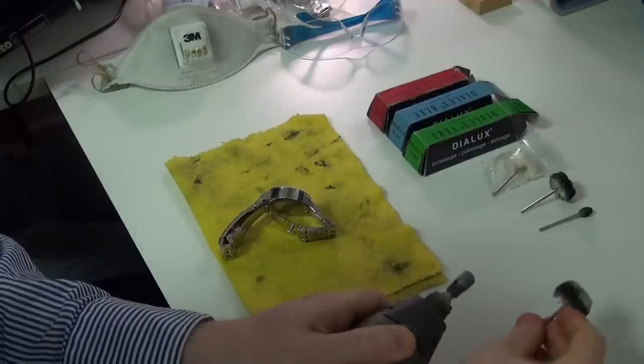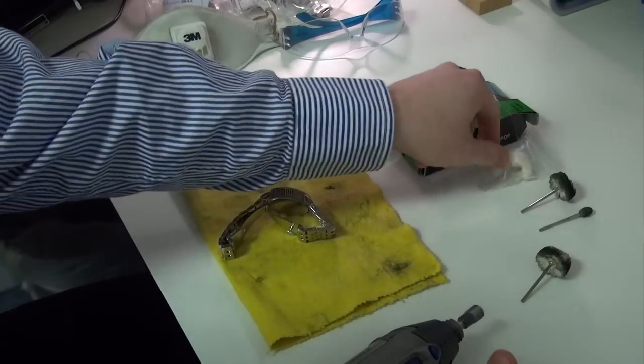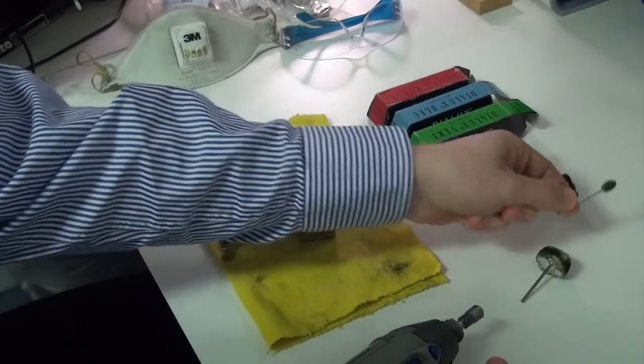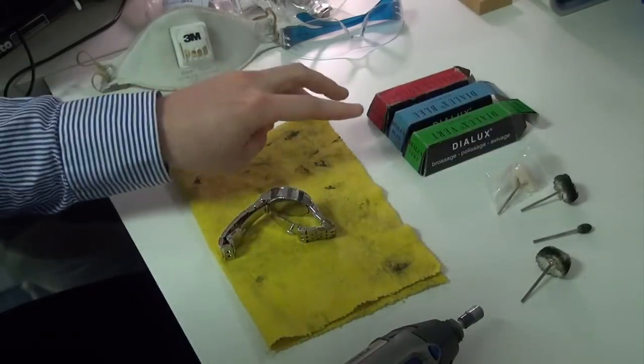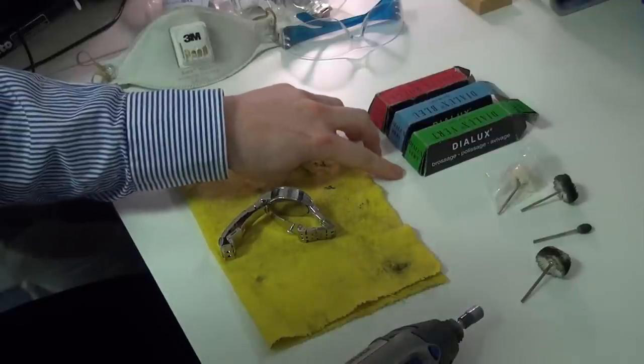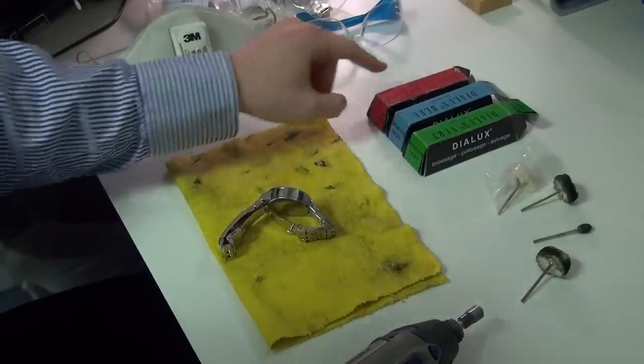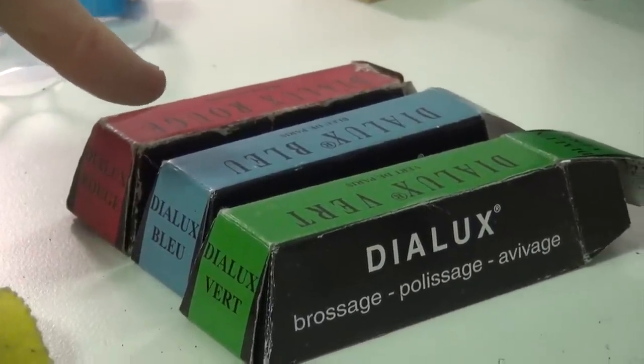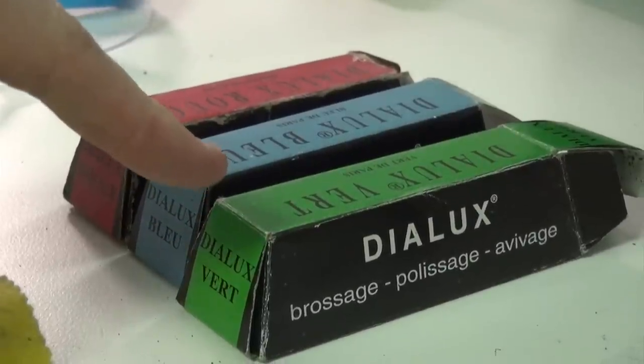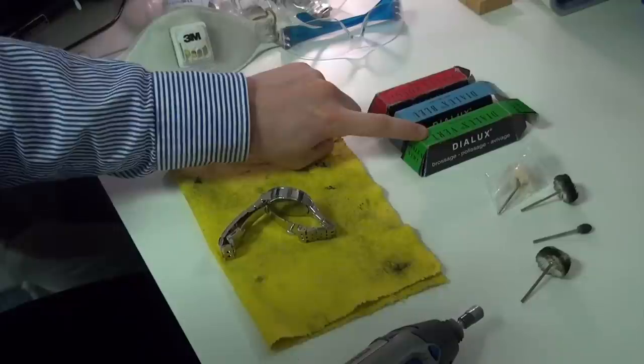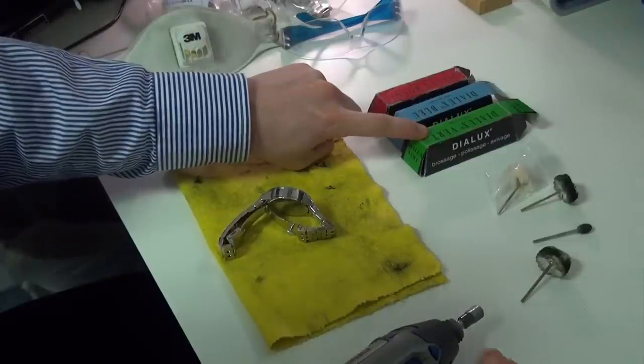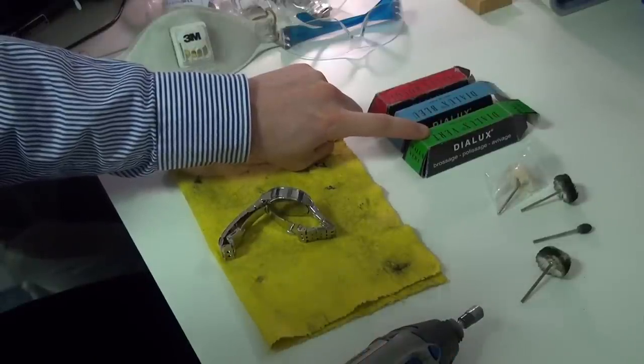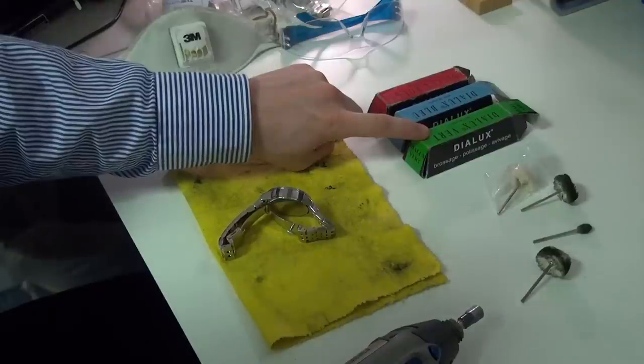We've got a new cotton wheel here and a shaping tool, and we've got three different sorts of compound. The red one we tend to use for gold, the blue one is for watches with quite large dents in them, and the green one is quite good for shining, like a last polish, and it also is useful just for getting a bit of small scratches.